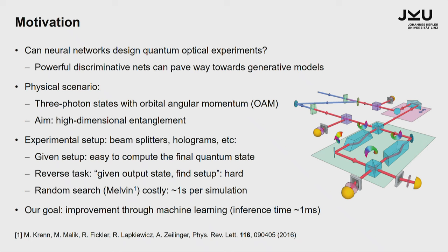The aim is to find interesting high-dimensional entanglement. Every experimental setup consists of a sequence of beam splitters, wave plates, holograms, and so on. Given a sequence of these experimental building blocks, it's very easy to compute the final quantum state — you can put that in a computer and do the unitaries, make matrix-vector multiplications, and you have your final quantum state. The reverse task is extremely hard: if I give you a high-dimensional entangled quantum state and ask how do you build that, this is close to impossible.